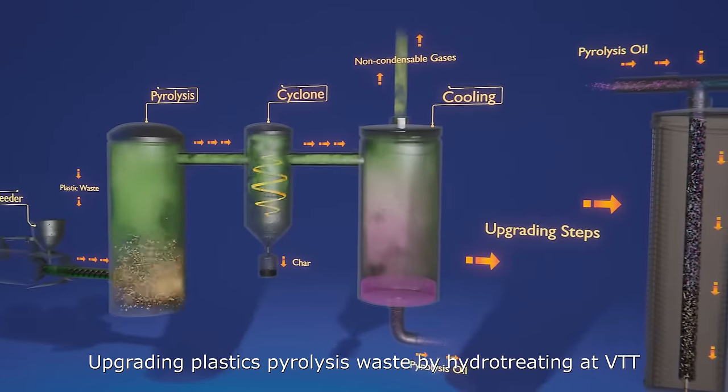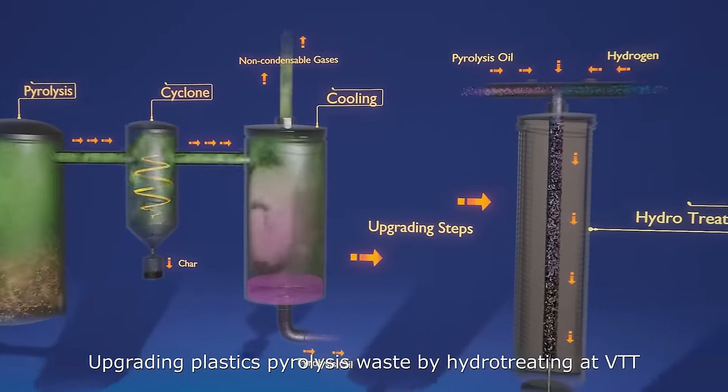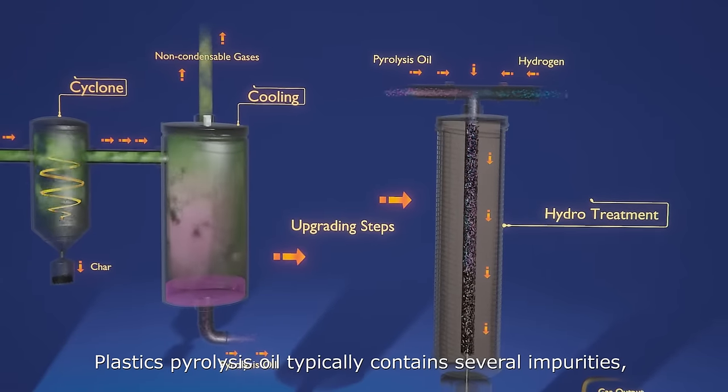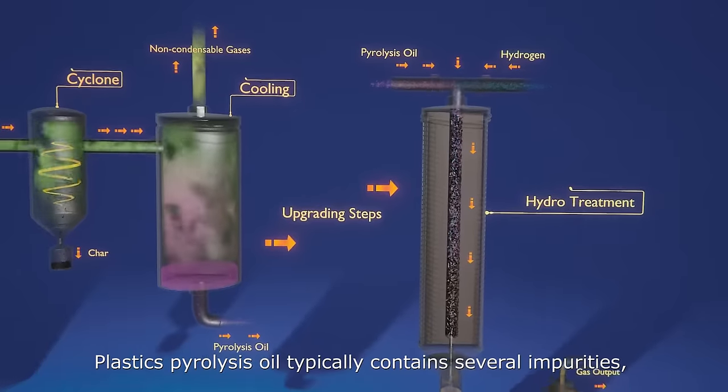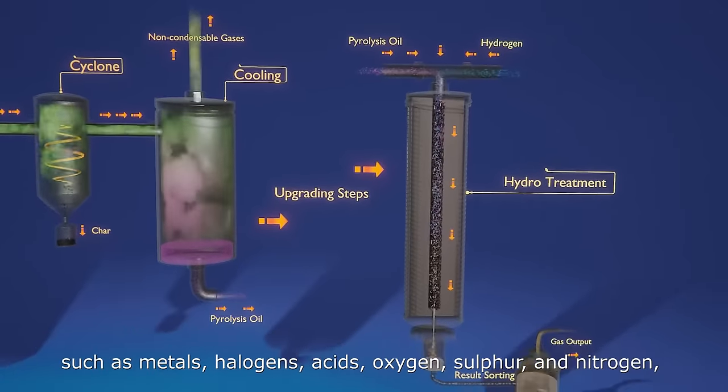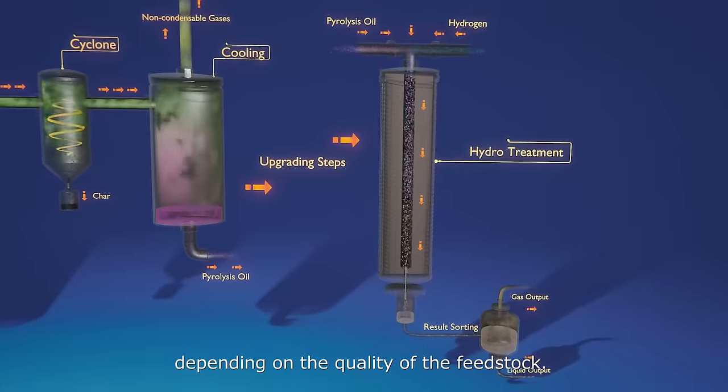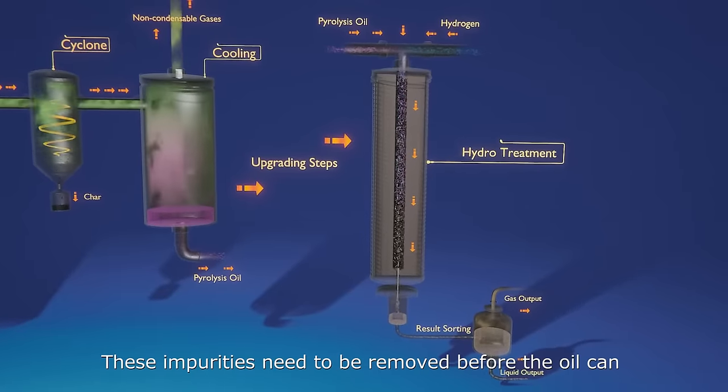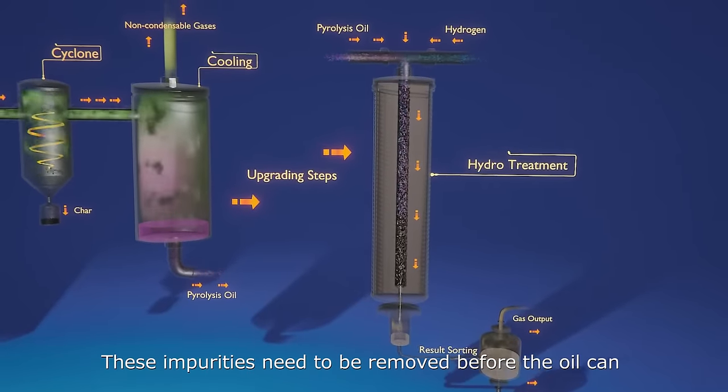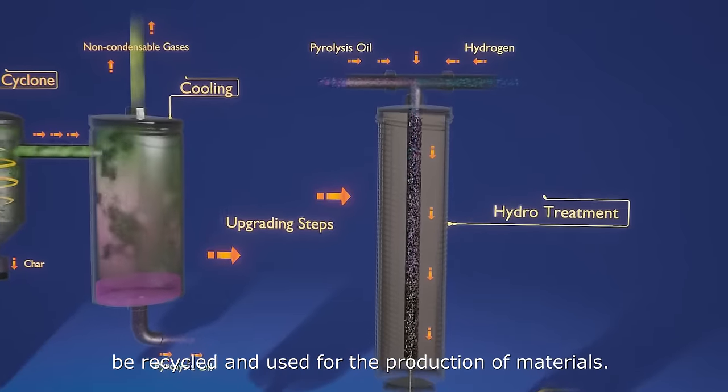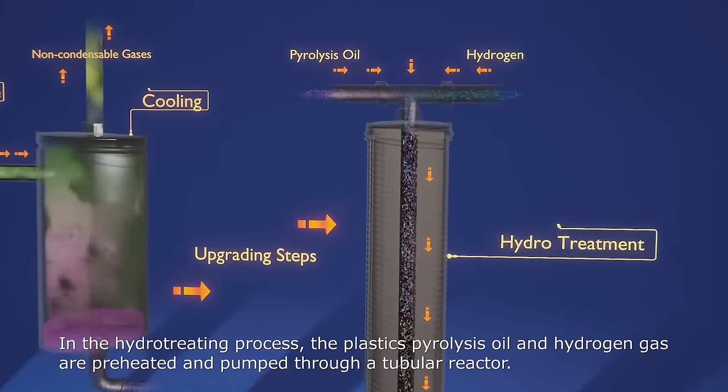Upgrading plastics pyrolysis waste by hydrotreating at VTT. Plastics pyrolysis oil typically contains several impurities such as metals, halogens, acids, oxygen, sulfur, and nitrogen depending on the quality of the feedstock. These impurities need to be removed before the oil can be recycled and used for the production of materials. In the hydrotreating process, the plastics pyrolysis oil and hydrogen gas are preheated and pumped through a tubular reactor.